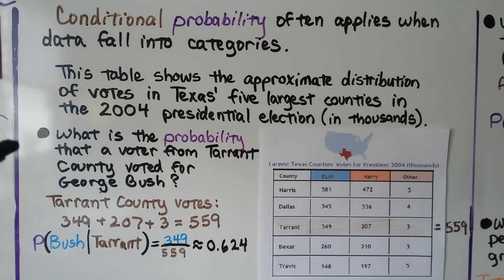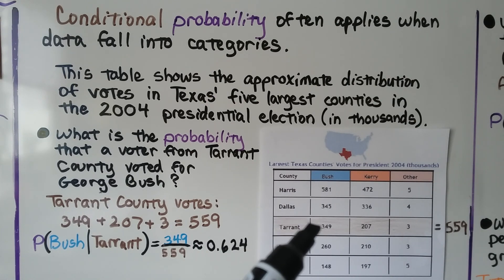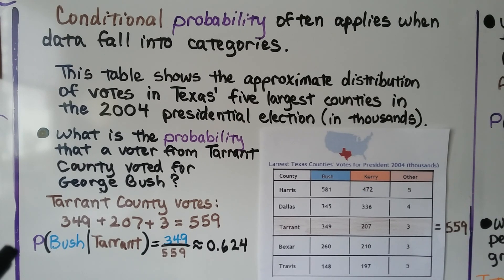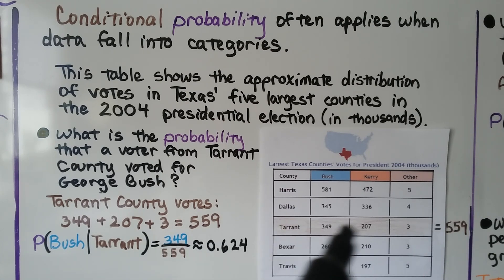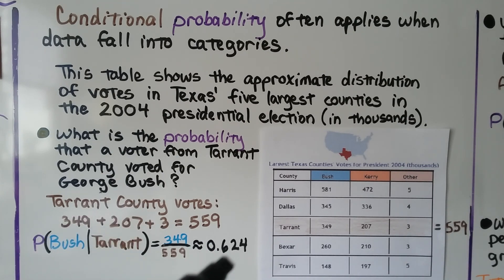What's the probability that a voter from Tarrant County voted for George Bush? When we go to Tarrant County and Bush, we see 349. We total the Tarrant County votes: 349 plus 207 plus 3 equals 559. So the probability they voted for Bush given Tarrant County is 349 over 559, which is approximately 0.624.